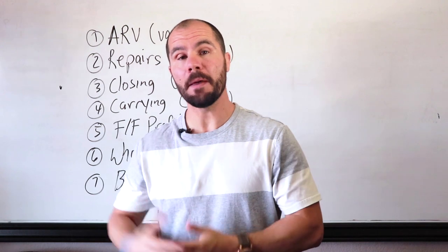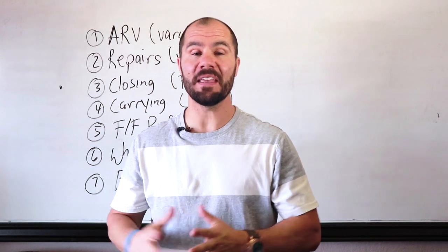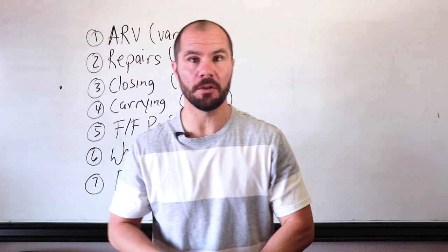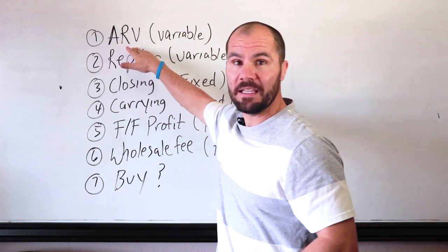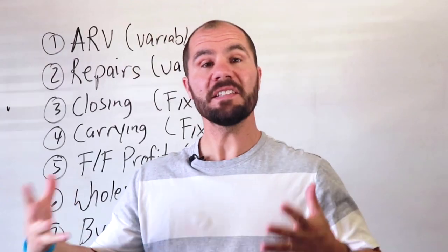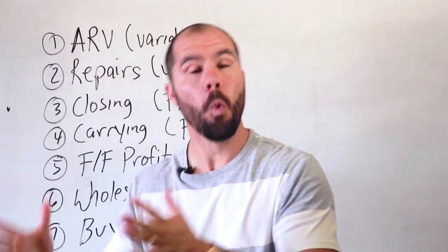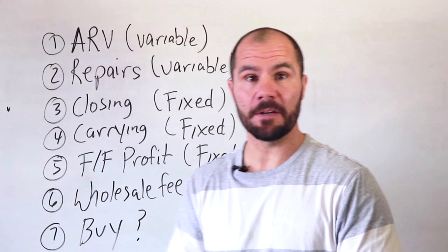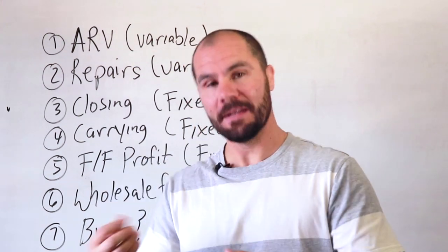In order to understand the buy formula for flipping houses, you need to know that there are seven things we consider and factor in on every single deal. First is our ARV — after repair value. This is the price the home will sell for on the current open market once it's fixed up. This is a variable because every deal is different since the ARV depends on the house and the neighborhood.